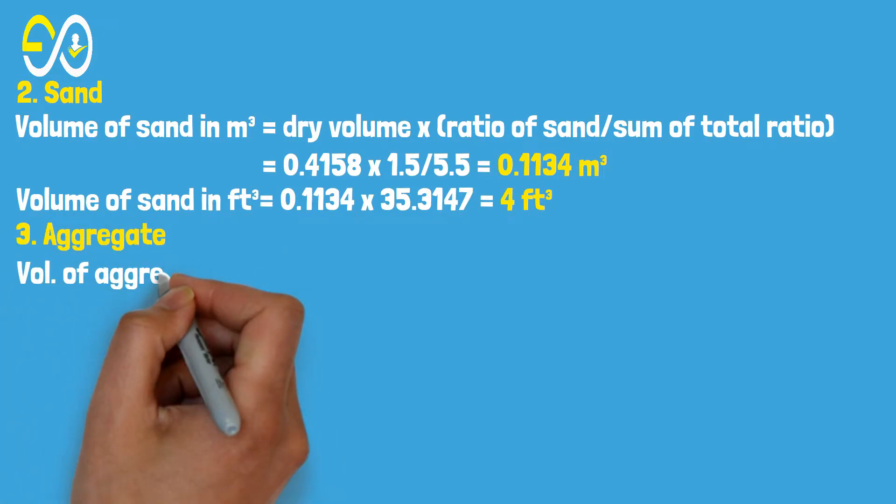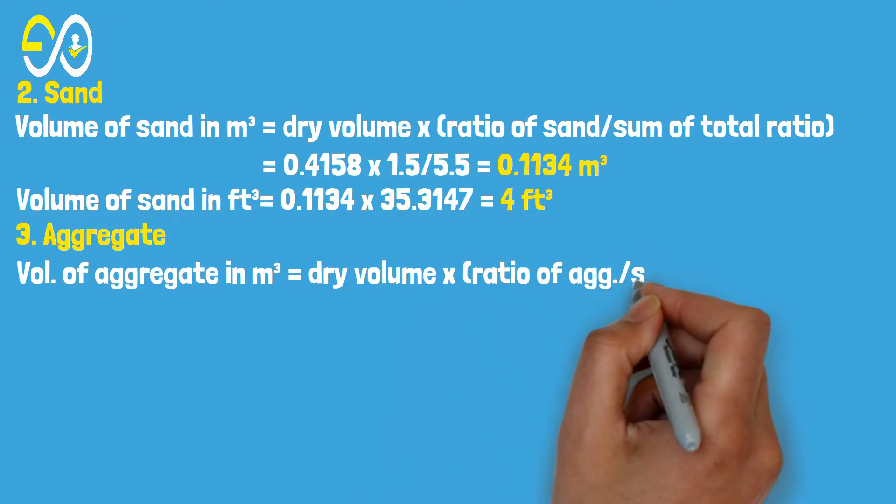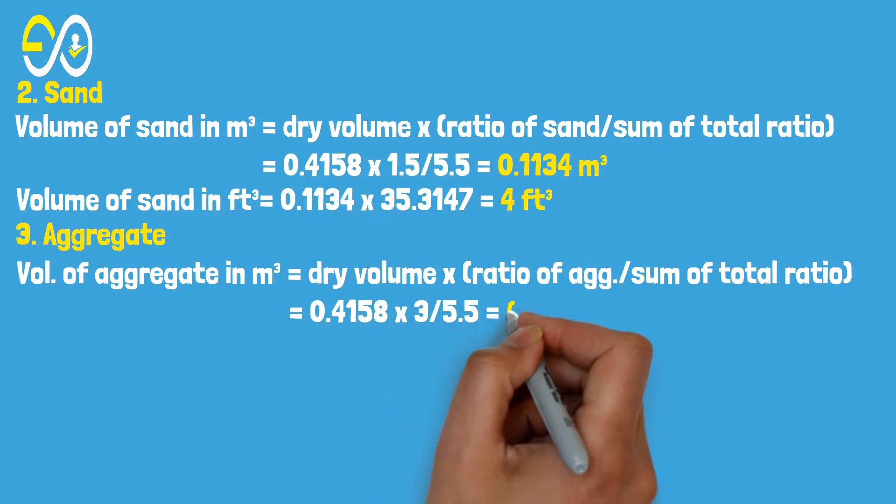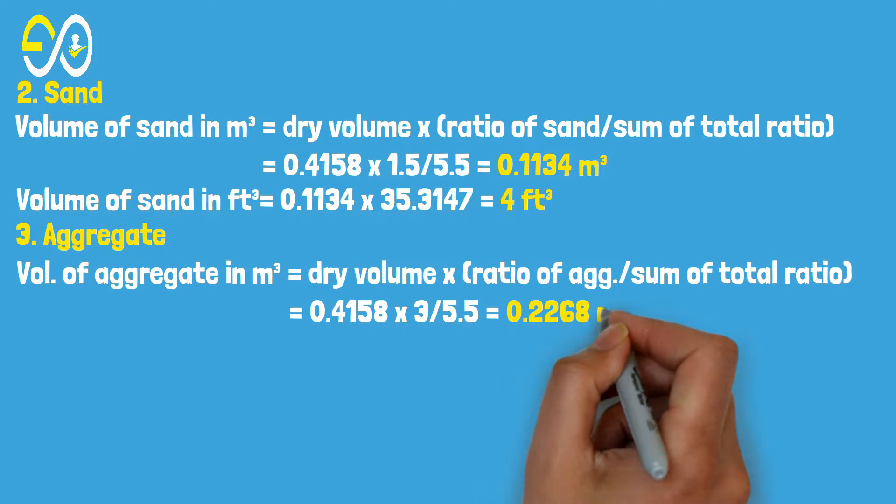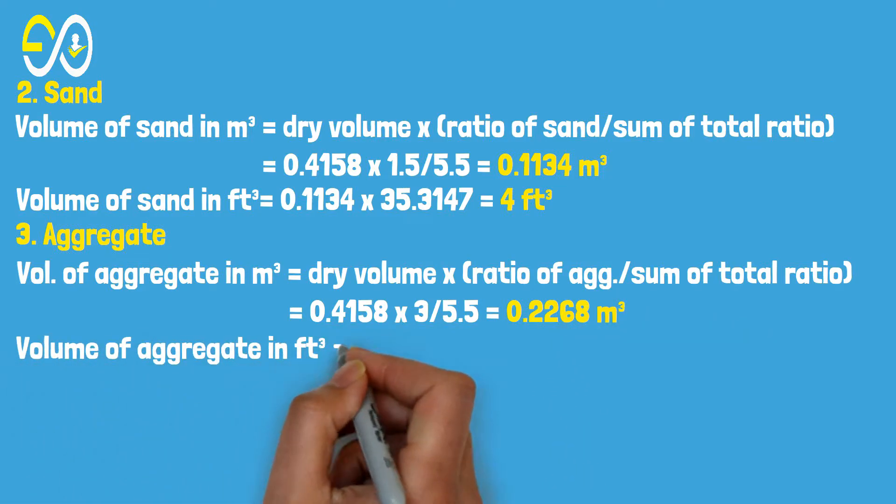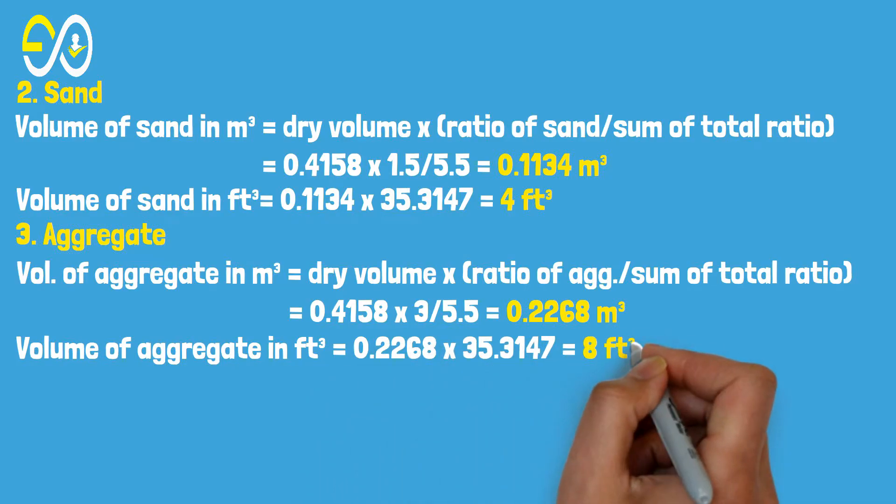Volume of aggregate in cubic meters equals dry volume times ratio of aggregate divided by sum of total ratio. This equals 0.4158 times 3 divided by 5.5, which equals 0.2268 cubic meters. Volume of aggregate in cubic feet equals 0.2268 times 35.3147, which equals 8 cubic feet.